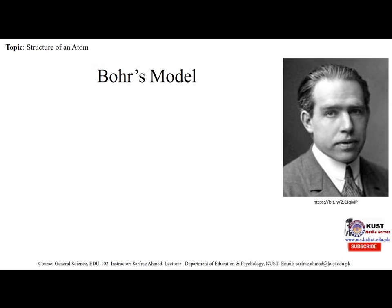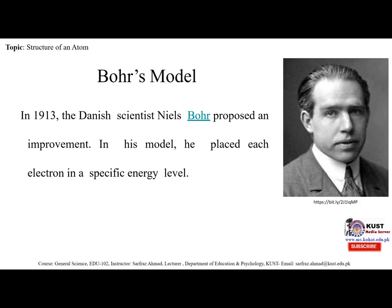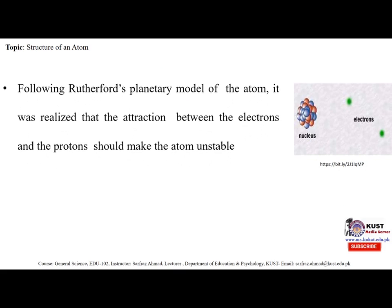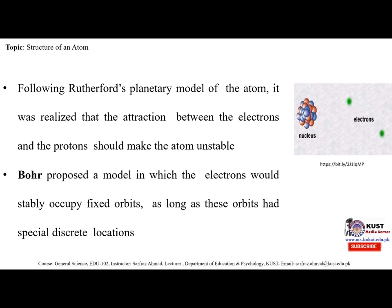Then came the Bohr atomic model. In atomic physics, the Bohr model — or Rutherford-Bohr model — was presented by Niels Bohr and Ernest Rutherford in 1913. This is a system consisting of a small dense nucleus surrounded by orbiting electrons, similar to the structure of the solar system, but with attraction provided by electrostatic forces in place of gravity. In 1913, the Danish scientist Niels Bohr proposed an improvement in which he placed each electron in a specific energy level. Following Rutherford's planetary model, it was realized that attraction between electrons and protons should make the atom unstable. Bohr proposed a model in which electrons would steadily occupy fixed orbits as long as those orbits had special discrete locations.